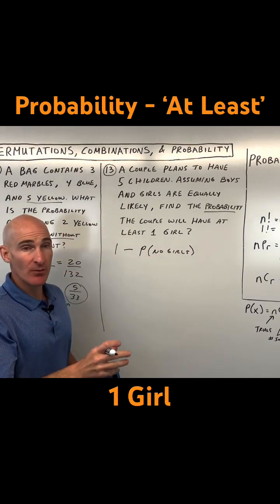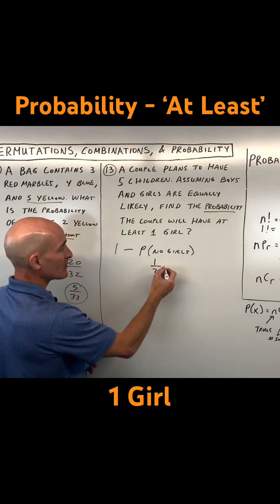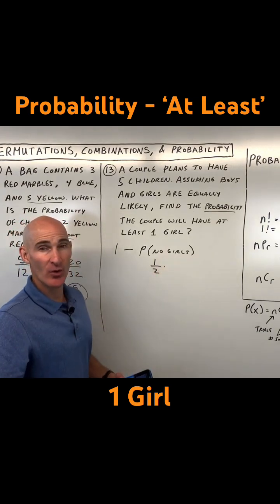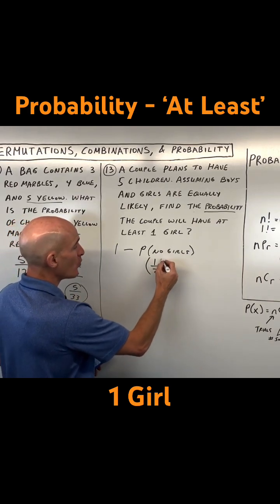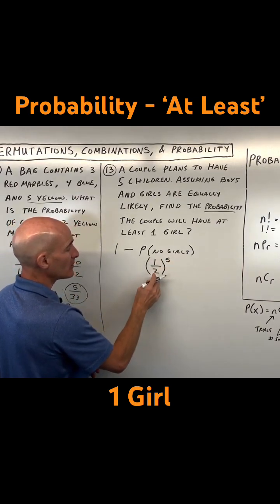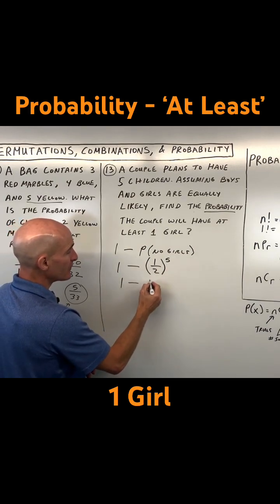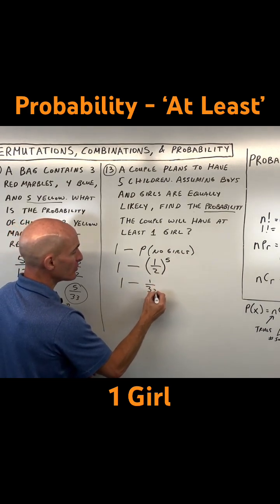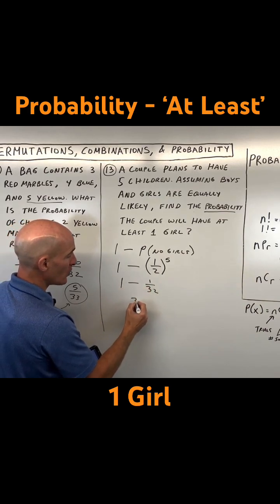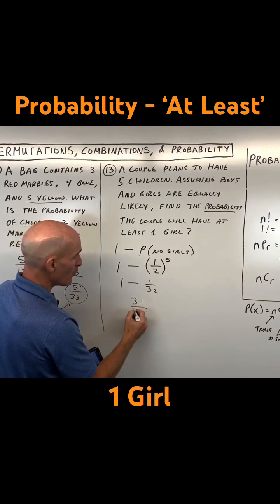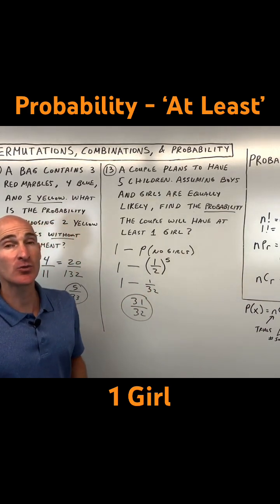What's the probability that the first one's a boy? It's one chance out of two. What's the probability that the second one's a boy? One out of two — and so on for each child — so that's really one half to the fifth power. We want one minus that. One half to the fifth is one over 32. One is like 32 over 32, minus one would be 31 over 32. So that would be your probability of having at least one girl.